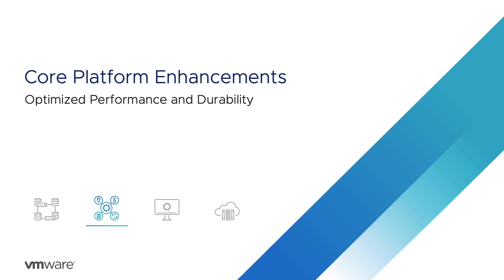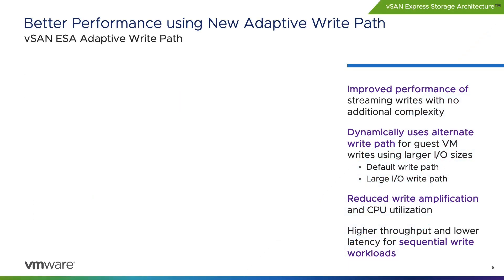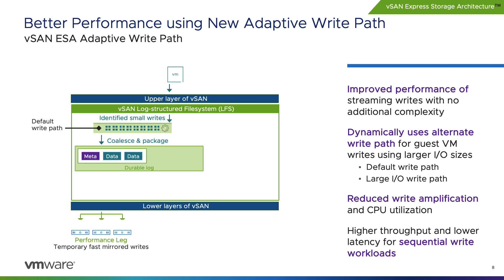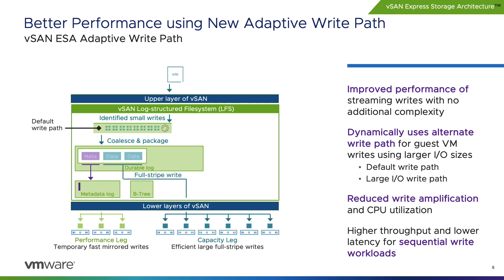vSAN 8 Update 1 introduces several new enhancements to the core platform that deliver better performance, improved data durability, and all new levels of integration. A key part of the new vSAN express storage architecture is our patented log structure file system, vSAN LFS. It allows the ESA to ingest writes quickly while preparing the data to be written in a space-efficient manner.